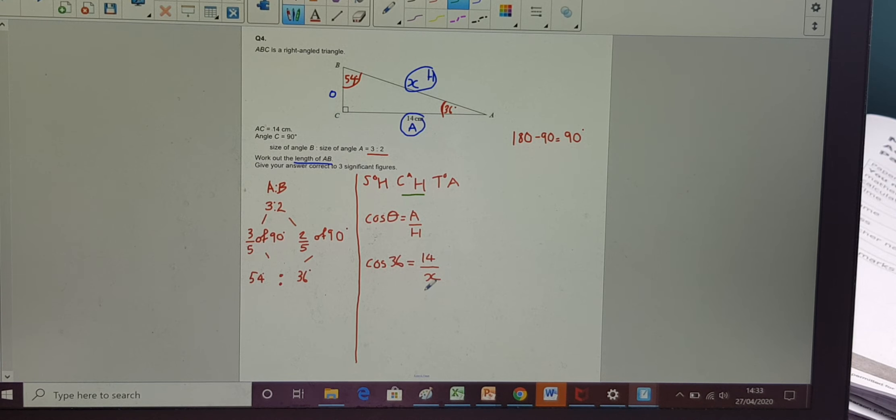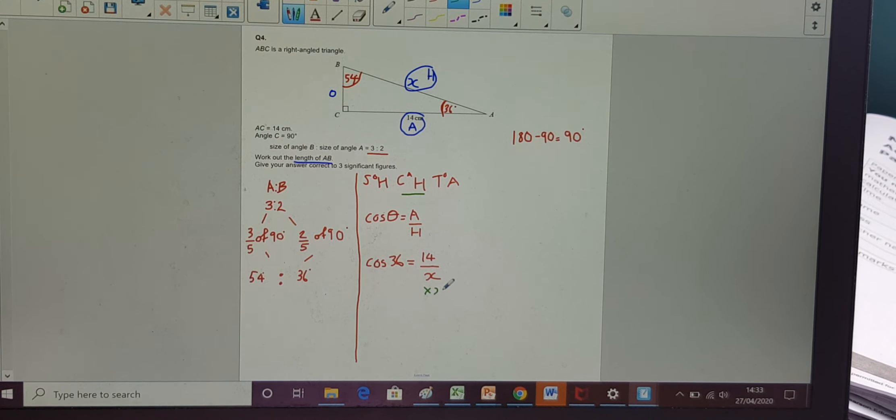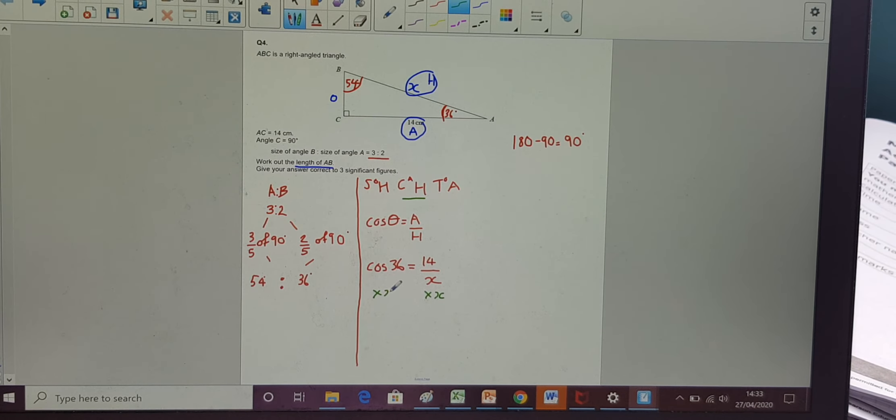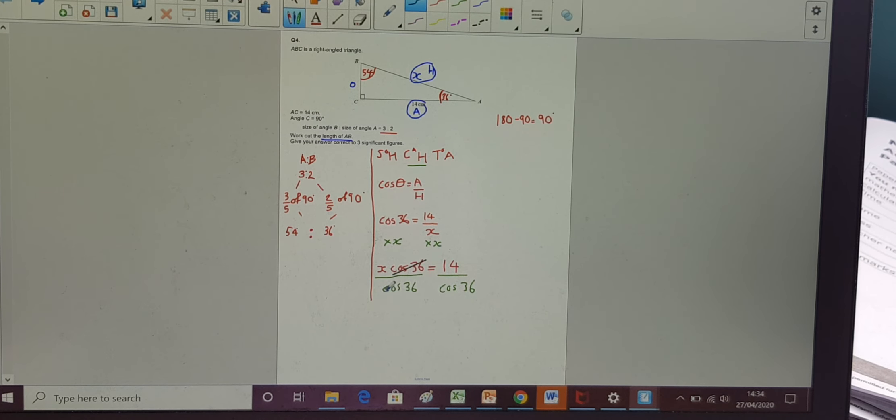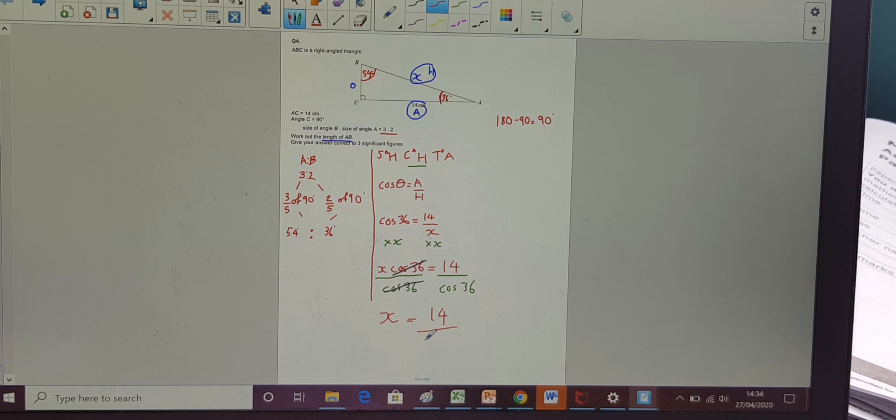So, X is the denominator. I don't currently want it as my denominator. What can I do? If I multiply that by X and multiply this side by X, that's going to leave me with X times cos 36, or just X cos 36, equals 14 divided by X times X is just 14. X is being multiplied by cos 36, so let's divide by cos 36 on both sides. That's just going to leave me, so these cos 36 divided by cos 36, is just going to leave me with X equals 14 over cos 36.